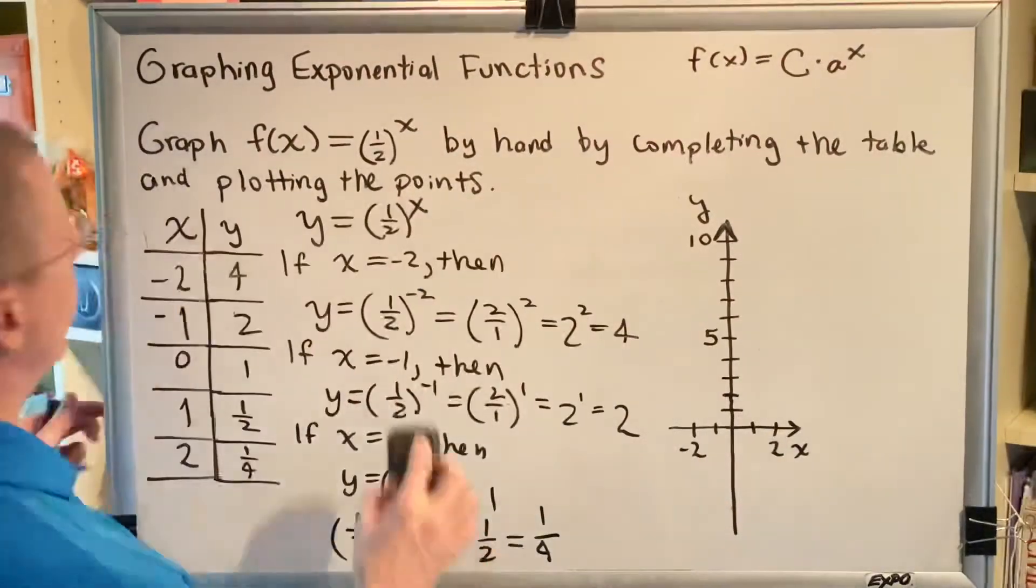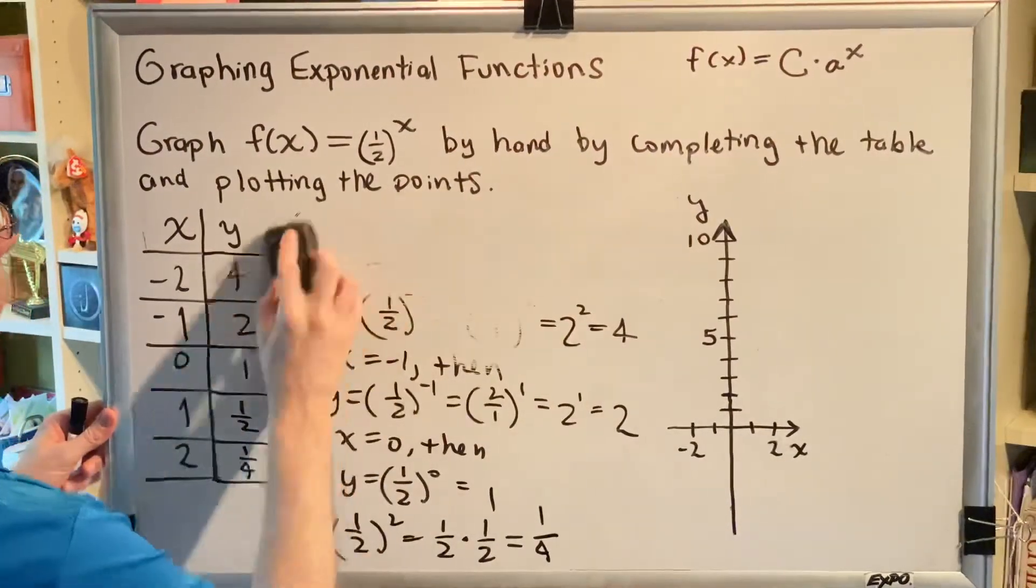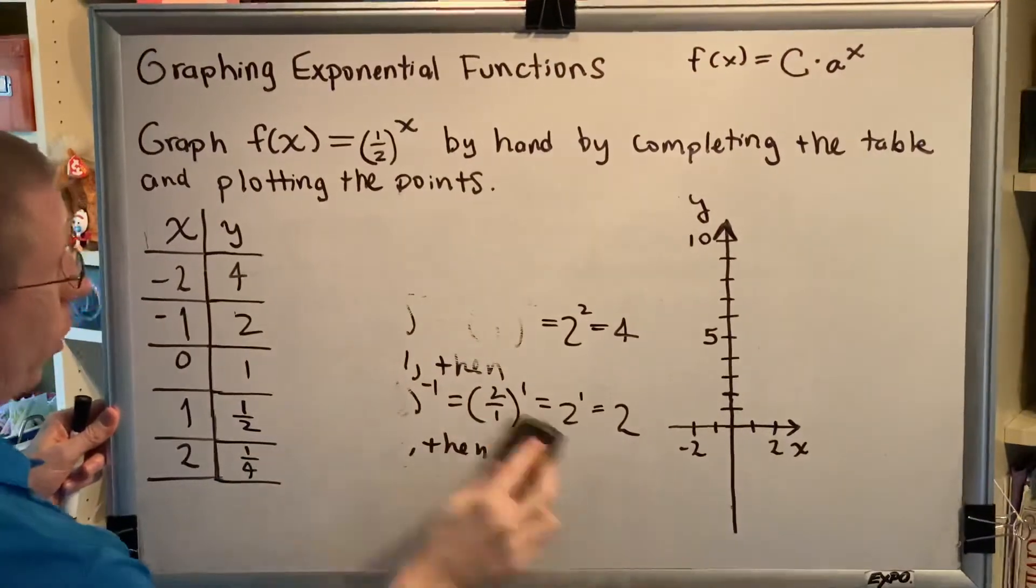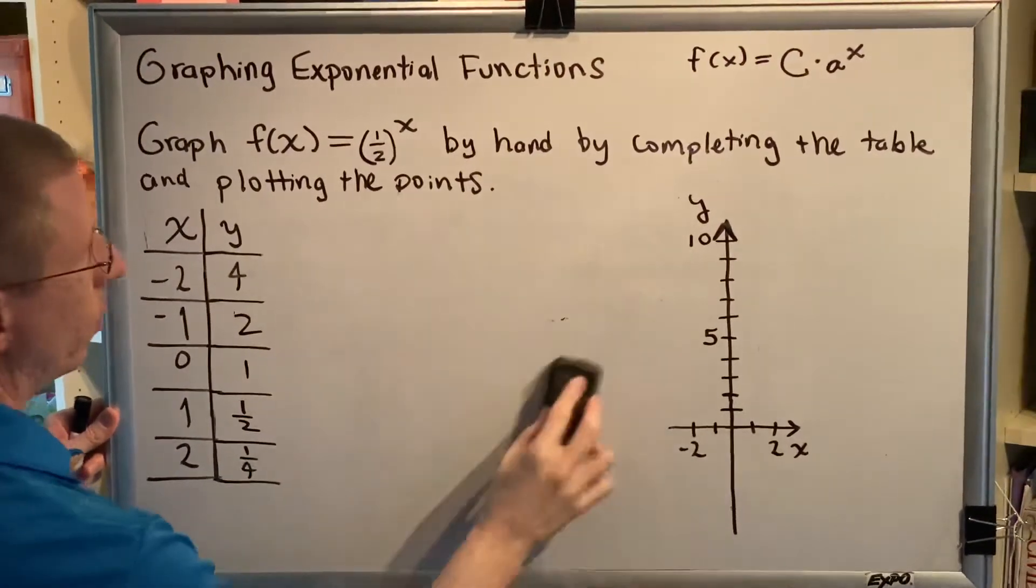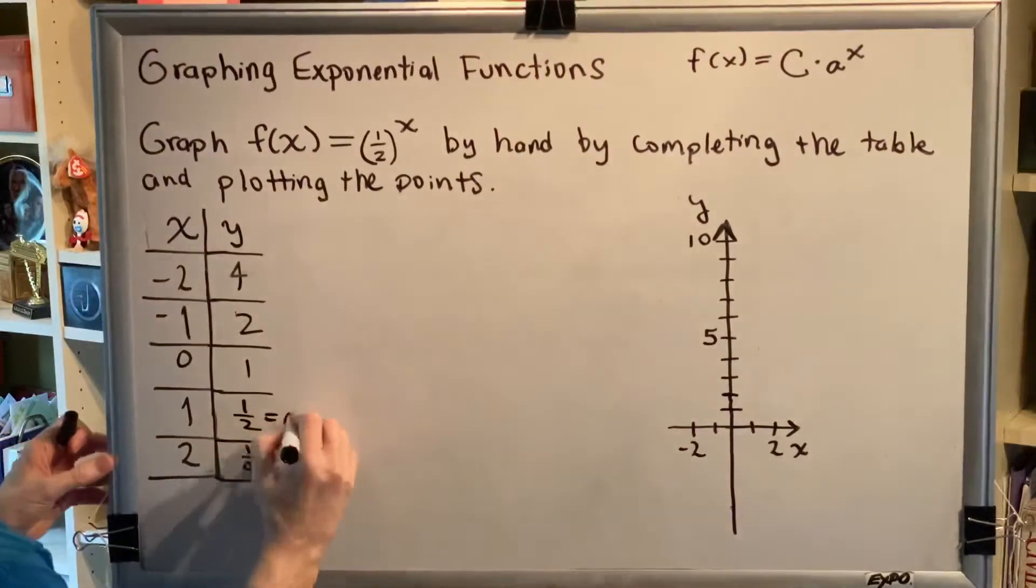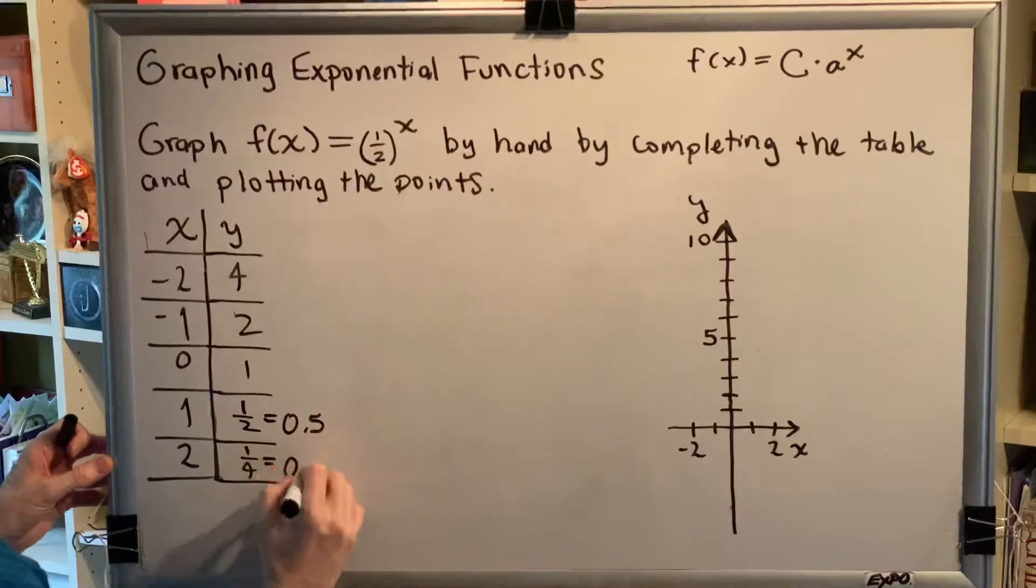So now we have all of our points. We're going to replace the fractions with decimals, just because it makes it a little bit easier to understand the graphing. 1/2 is 0.5, 1/4 is 0.25.